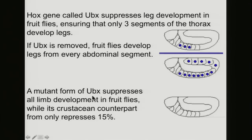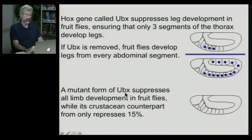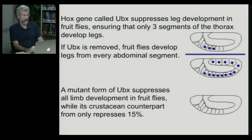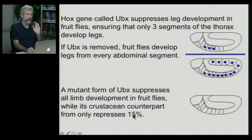There's another mutant form of UBX that actually prevents any buds from forming whatsoever — a single mutation that causes a fly that would ordinarily grow six legs to have none whatsoever. This example is particularly interesting because a mutation of the same gene that regulates how many legs a fly has, if you have that mutation in one of the crustacea — the kind of organism that eventually gave rise to modern insects — this mutation doesn't suppress all of the legs in the developing crustacean; it represses just a percentage of them.